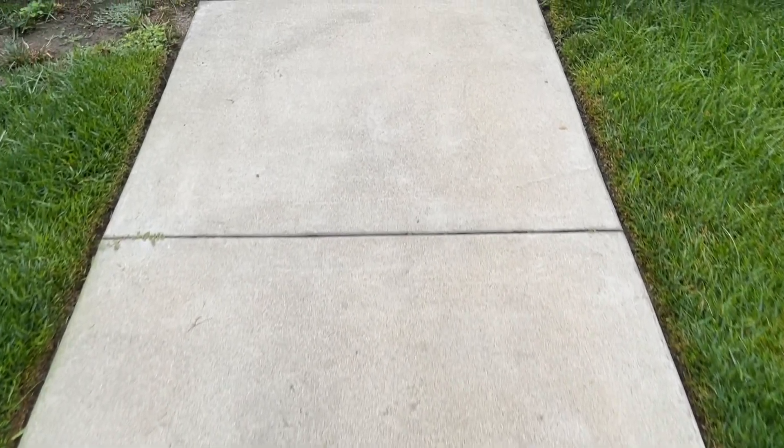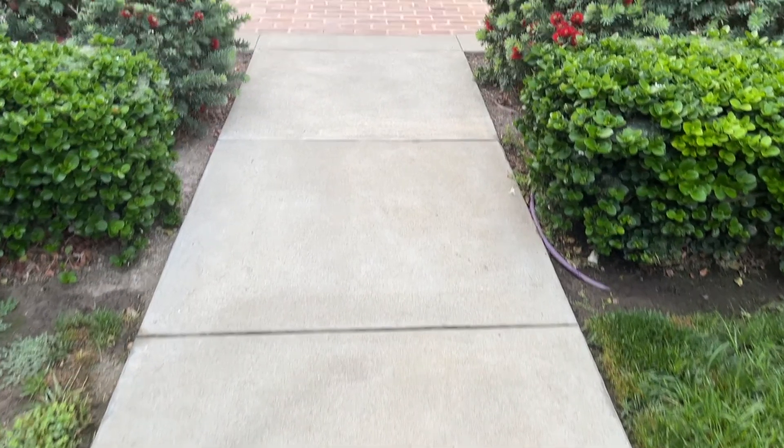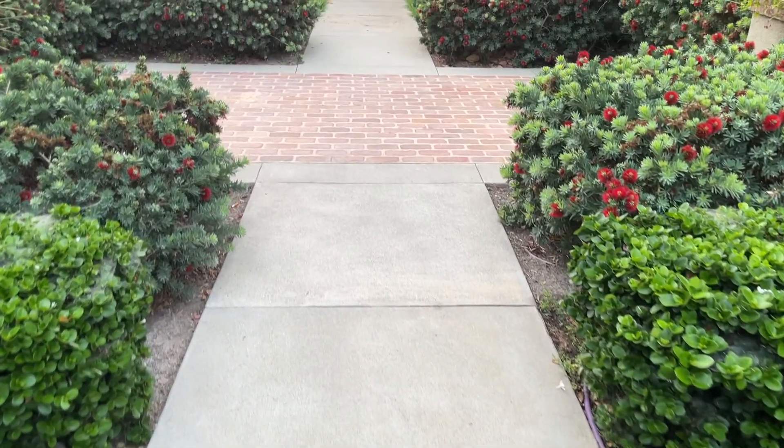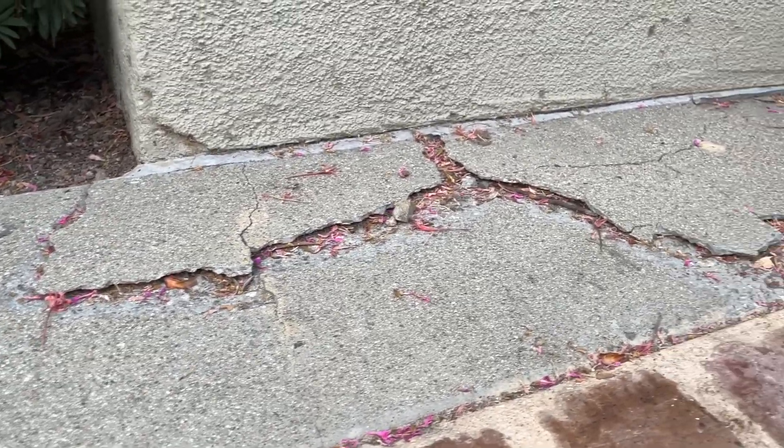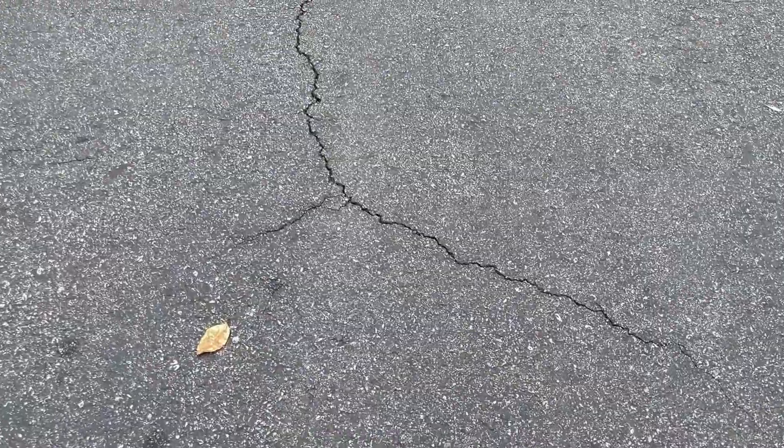So these gaps are built into sidewalks in order to allow for this expansion and contraction. Now you will see occasional spots where there are cracks, and that's usually where it's expanded and contracted either too much or too fast. And that's why you'll see these cracks in cement or asphalt.